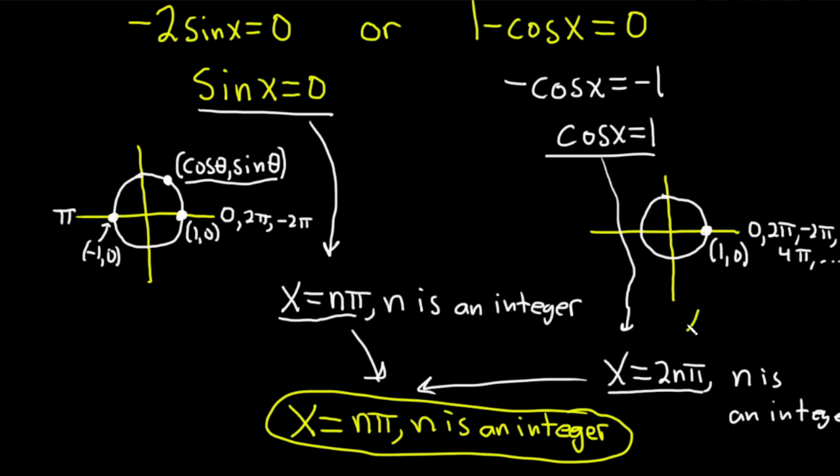For example, if you choose n equals 1, you get x equals 2 pi. Oh, but you can just use 2 here in our answer and that'll work. If you choose n equals 2, you'll get 4 pi. Well, you can just choose 4 in our answer here and it will work.